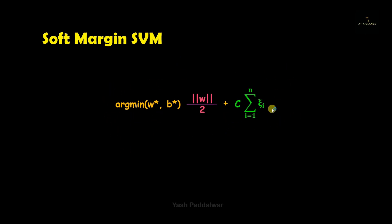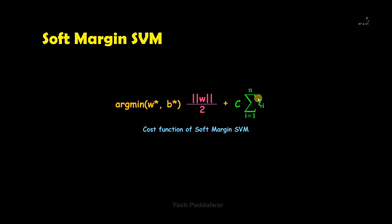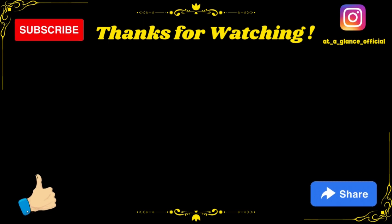The significance of each term in the soft margin SVM expression is now clear. This expression is the cost function of soft margin SVM. In short, the goal is to find the best hyperplane that creates a wider margin while allowing some misclassifications. In real world cases where two classes cannot be linearly separated, you can use soft margin SVM. I hope each and every concept explained in this video is clear. Watch the video again if you have any doubts, or post them in the comment section. Don't forget to share this video and subscribe to the channel.